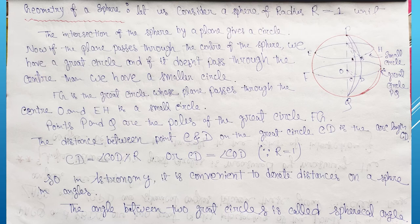So FG is a great circle whose plane passes through the center O, and EH is a small circle. FG passes through the center of the sphere so here we get a great circle. EH doesn't pass through the center of the sphere so here we get a small circle.